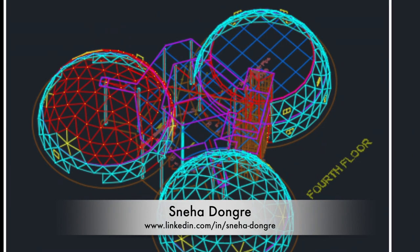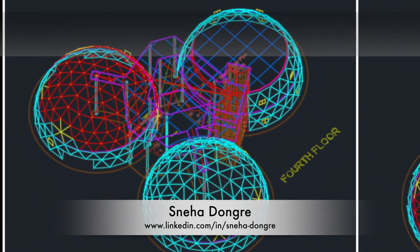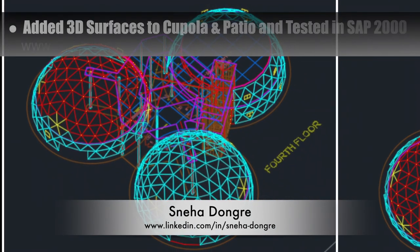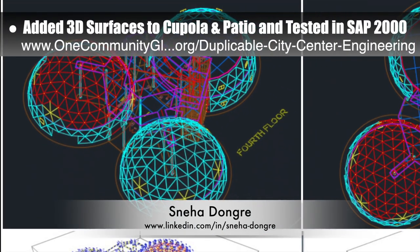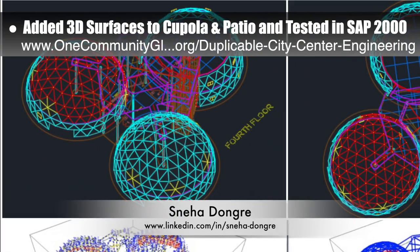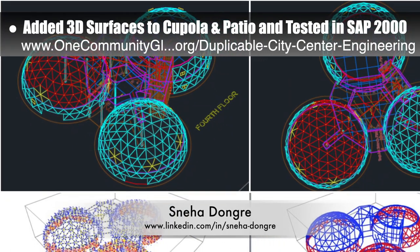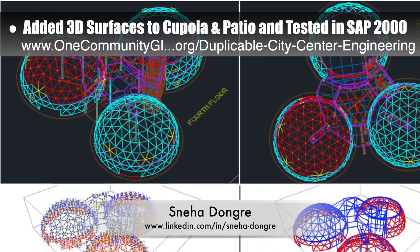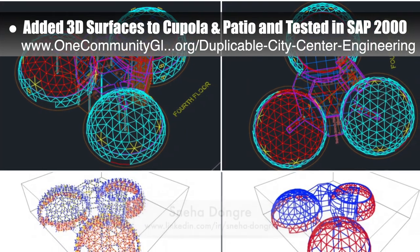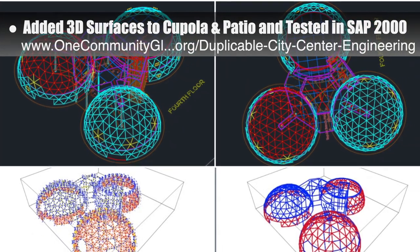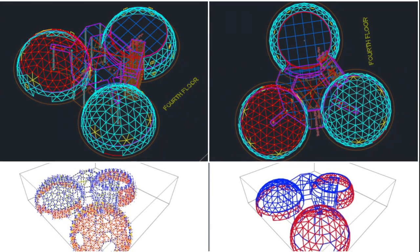Sneha Dongre, structural engineer, additionally continued with her 15th week helping with the duplicable city center structural details. This week's focus was adding 3D surfaces to the cupola and surrounding patio and testing them in SAP 2000. You can see some of this work here.